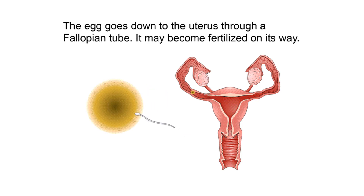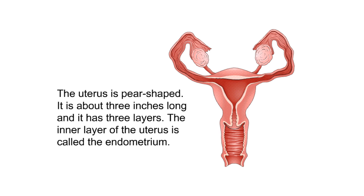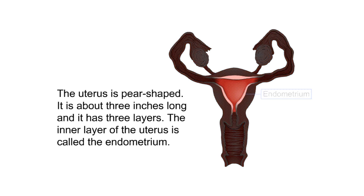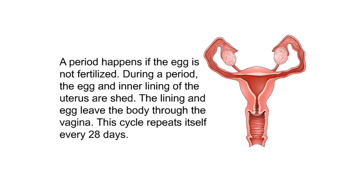Every 28 days, one of the ovaries releases an egg. The egg travels down to the uterus through a fallopian tube, where it may become fertilized. The uterus is pear-shaped, about three inches long, and has three layers. The inner layer is called the endometrium. If the egg is not fertilized, a period occurs, during which the egg and inner lining are shed and leave the body through the vagina.